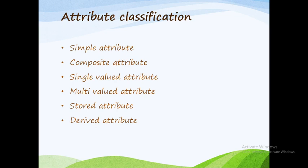Welcome students, this is a lecture in computer science. In the second unit, the next concept is attribute classification. As you know, attribute means characteristics of an object. These attributes may be of different types: simple attribute, composite attribute, single-valued attribute, multi-valued attribute, stored attribute, and derived attribute.